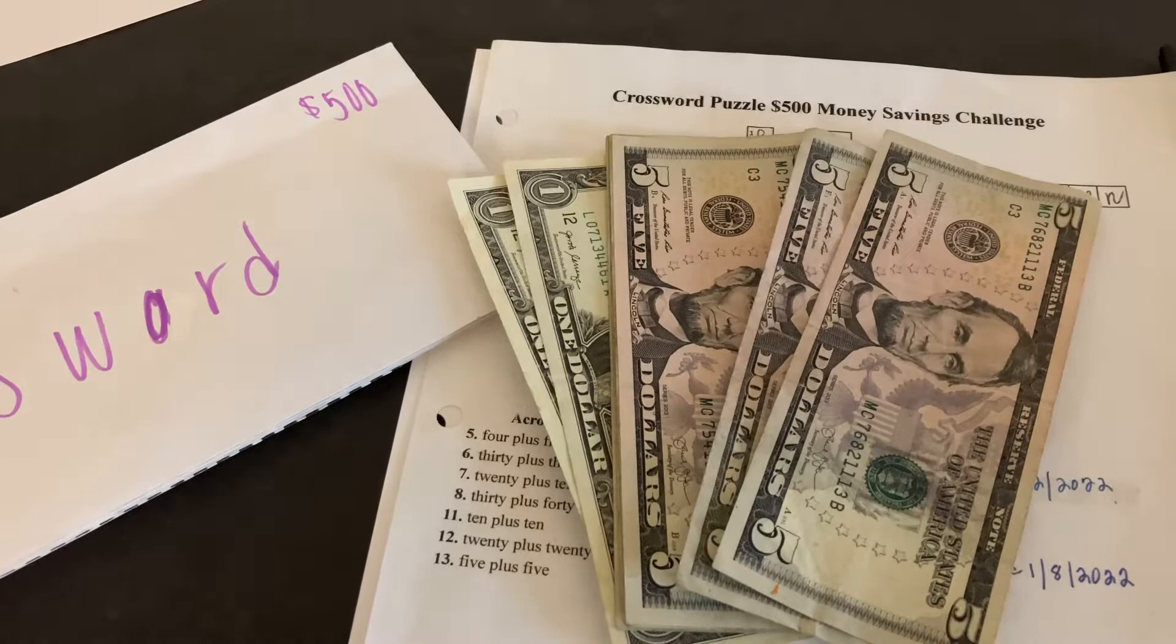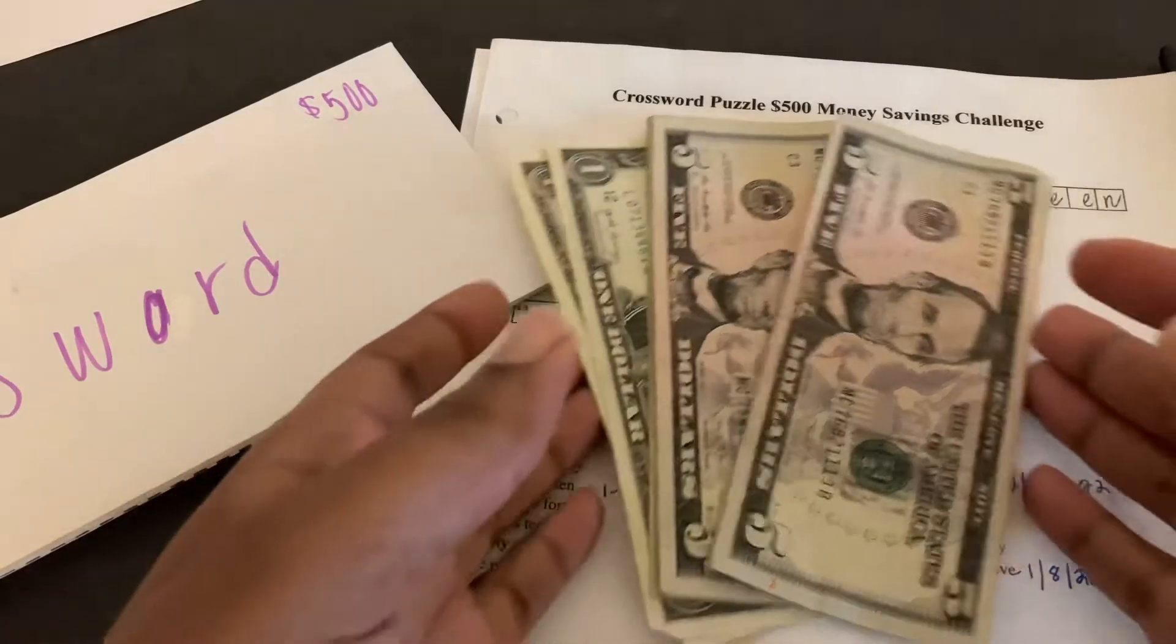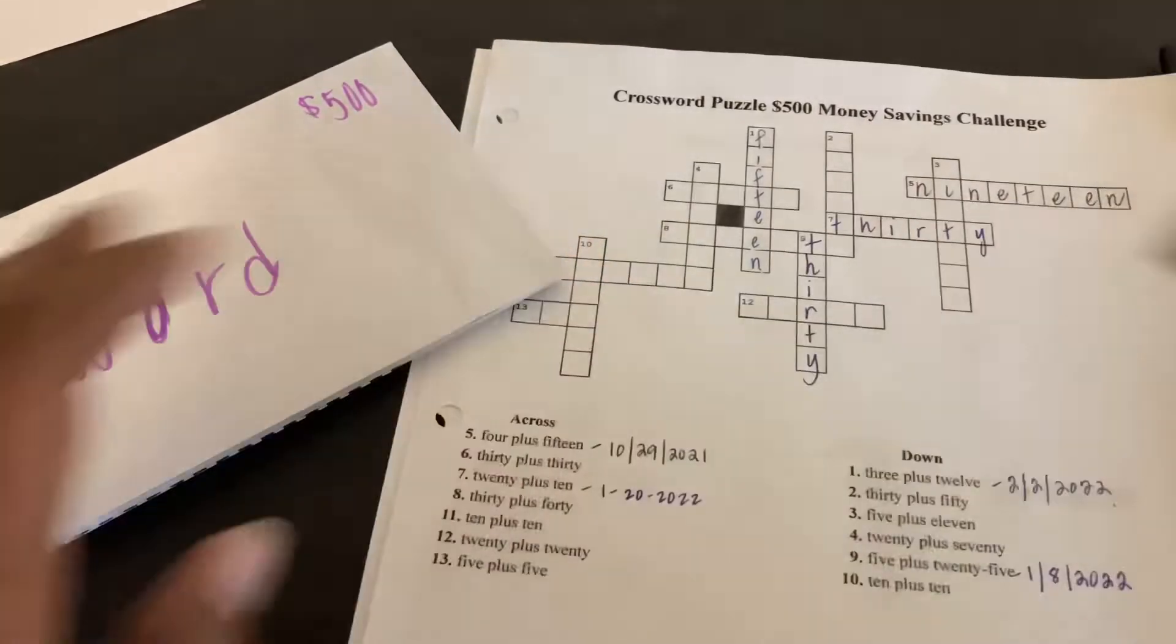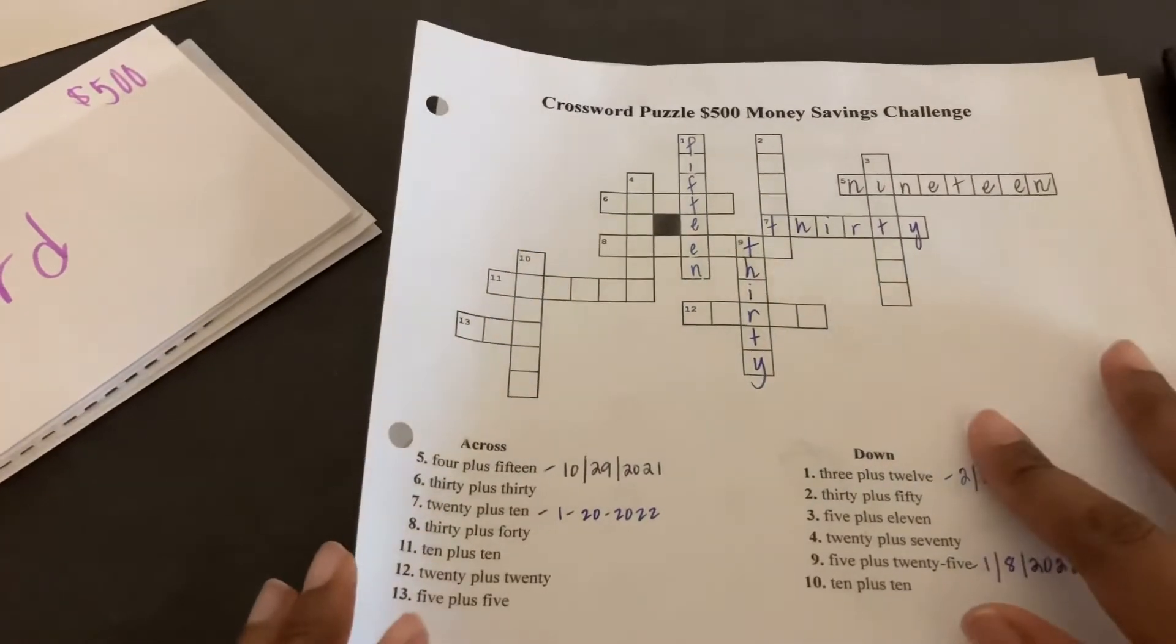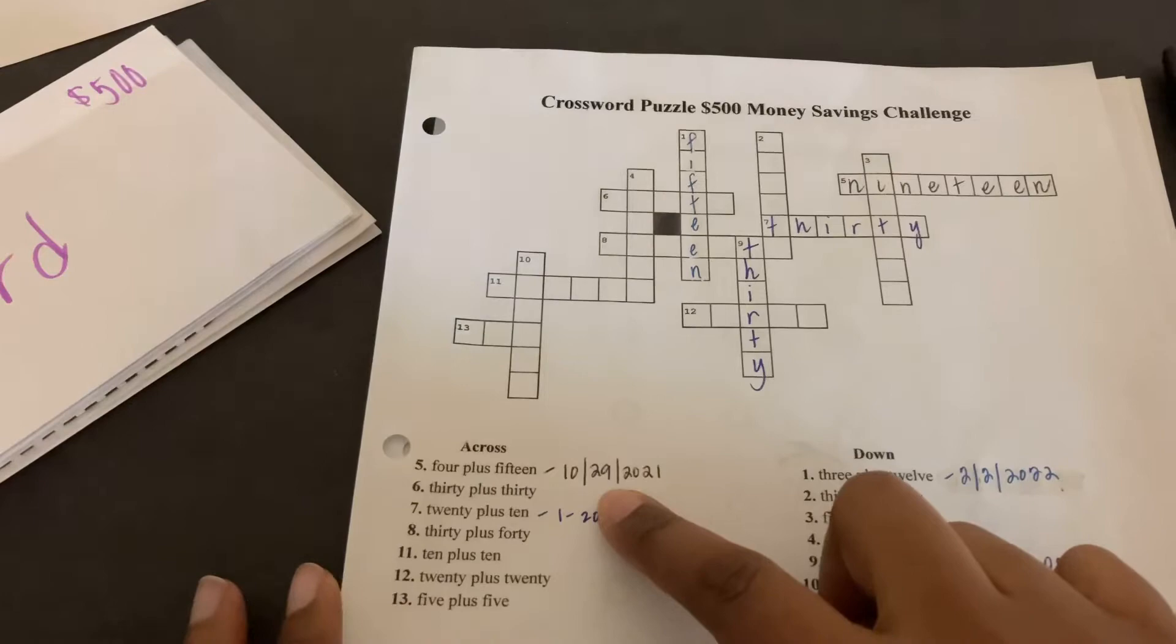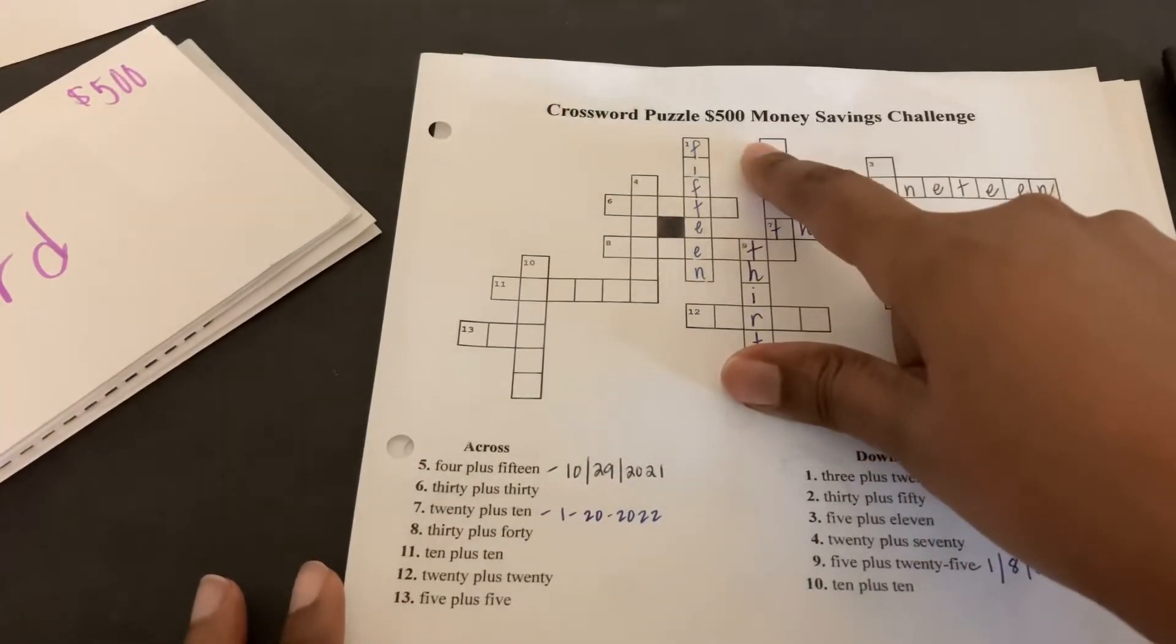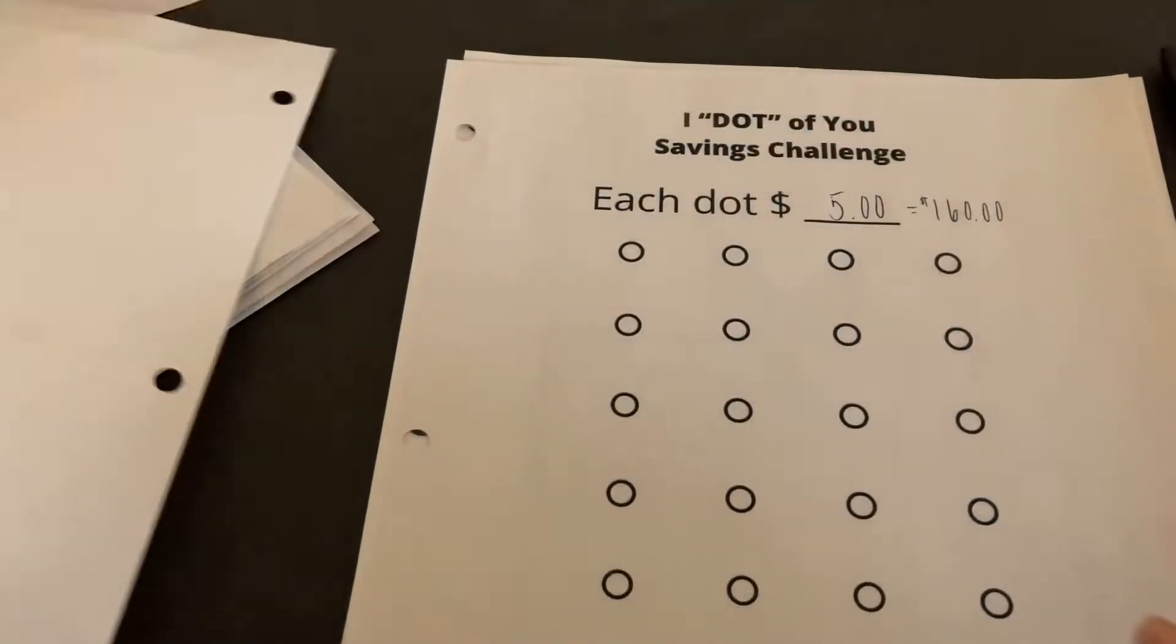Hello and welcome back to Mortgage with Me. In today's video, it will be a money savings challenge, and I do have several challenges that I am going to be doing this year. I started off last year in October. I did my first challenge on the crossword puzzle worth $500, and then I just created this one recently.